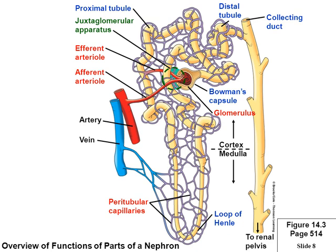The descending and ascending sides each have special features. The ascending path goes right back next to Bowman's capsule, weaving between the afferent and efferent arterioles — there's a purpose for that. It comes back as the distal tubule, which carries the filtrate into the collecting duct. Multiple nephrons feed one collecting duct. The collecting duct carries urine to the renal pelvis, which drips into the ureter and into the bladder.